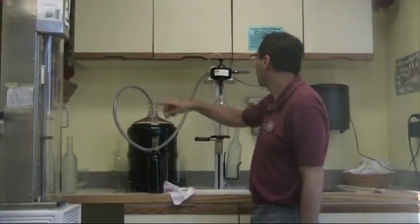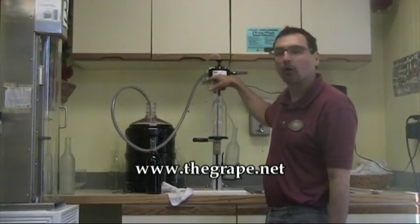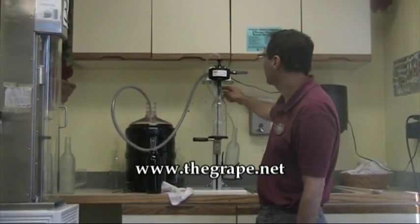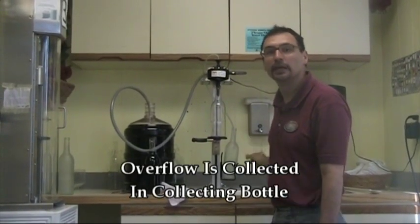It'll actually pump the wine from our carboy up into the filler head, down into the bottle, and then any overflow, once the bottle fills all the way to the top, will come down our little hose here into our small collecting bottle. So let's go ahead and give it a shot.